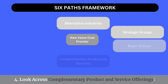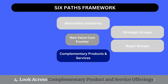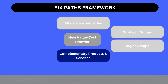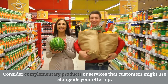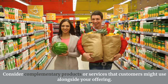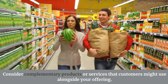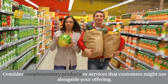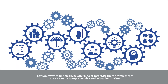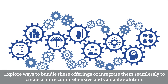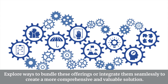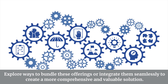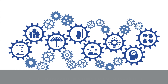Path 4: Look across complementary product and service offerings. Consider complementary products or services that customers might use alongside your offering. Explore ways to bundle these offerings or integrate them seamlessly to create a more comprehensive and valuable solution.